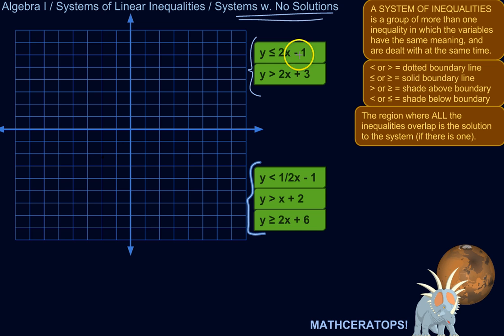We've got y is less than or equal to 2x minus 1. So I'm going to graph the boundary line for that. Let me plot a couple points that I can connect here. Y-intercept is negative 1. Slope is 2, so I go up 2 over 1. Then I just connect my points.